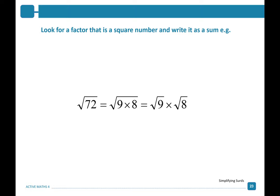Let's look at the following factor. To simplify the square root of 72, we look for a factor that is a square number and write it as a product. For example, the square root of 72 is the same as the square root of 9 times 8. The square root of 9 times the square root of 8 can be simplified to 3 root 8.